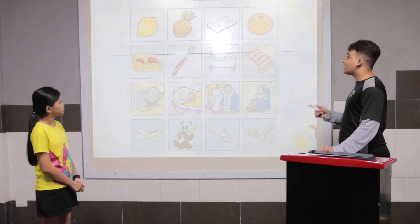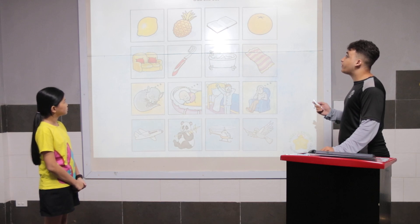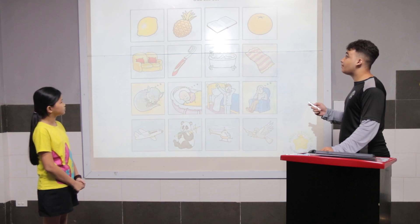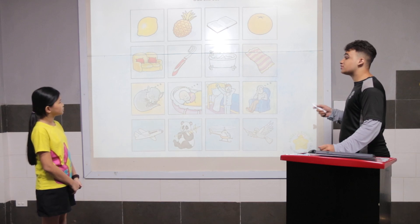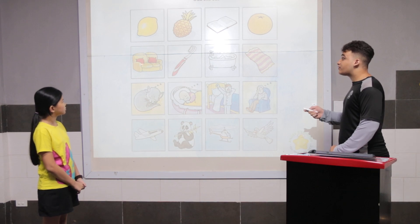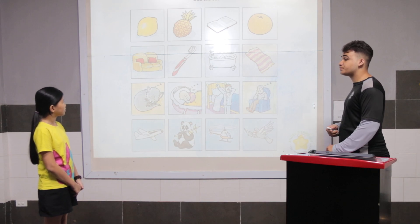So, this is called I've Grown Out. In the first row, the book is different because the lemon, pineapple, and orange — they're fruits. Can you tell me row two, three, and four?